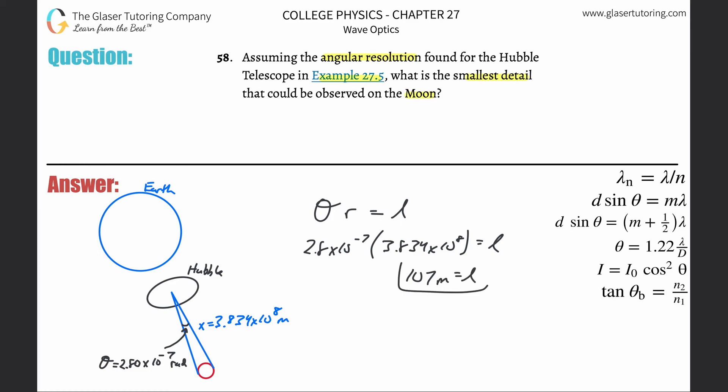That's the arc length here between these two points of that object. So this is the smallest possible size of the object. Just pretend you had an object that's 107 meters wide. Pretend it's a circle, so that's the diameter. And that's what you can see. That's the smallest detail on the moon.